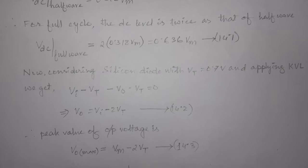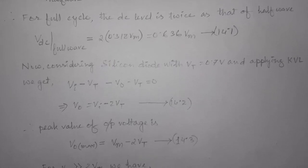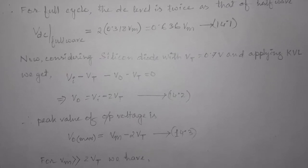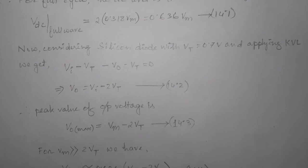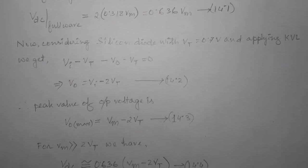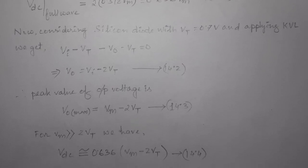Now considering diode with threshold voltage Vt equal to 0.7 volt and applying KVL, we get the value for maximum output voltage as shown by equation 14.3. For Vm much larger than Vt, the DC level is given by equation 14.4.